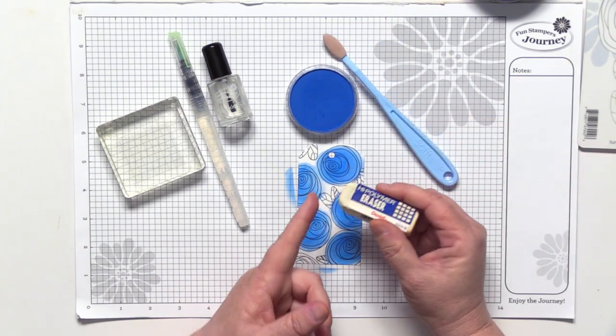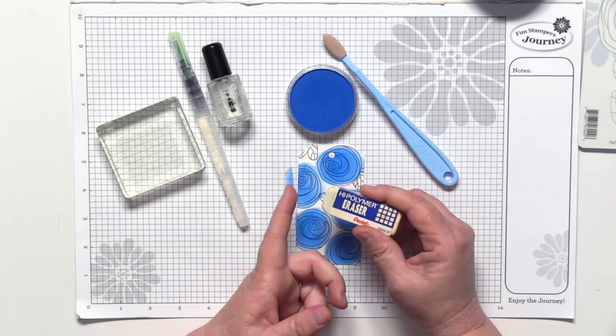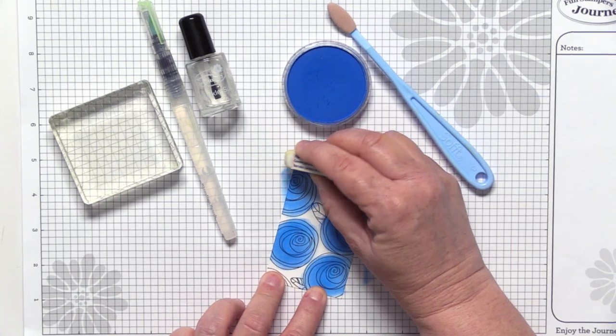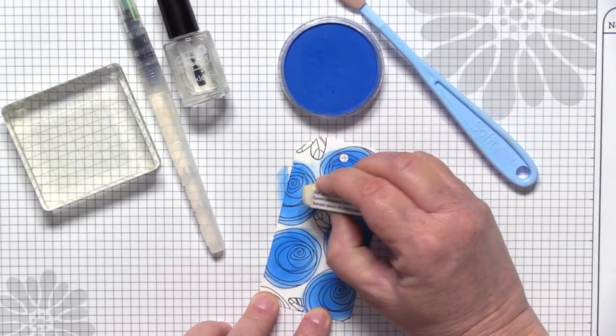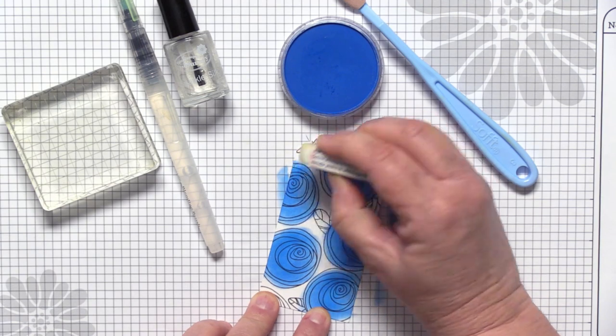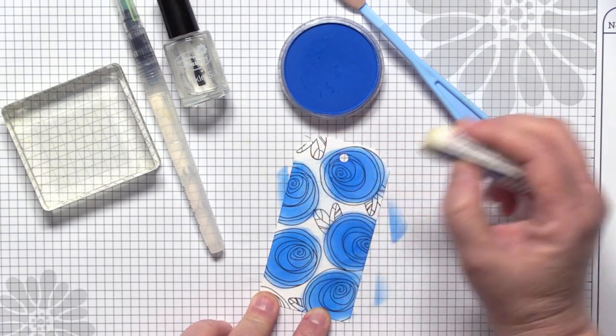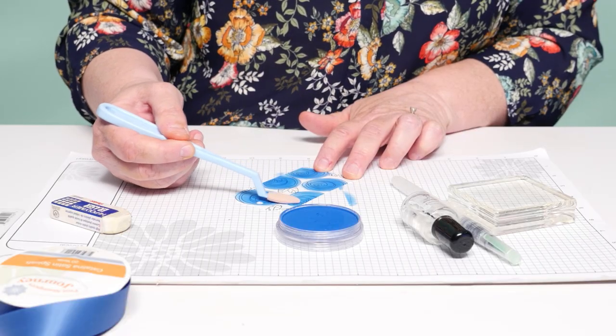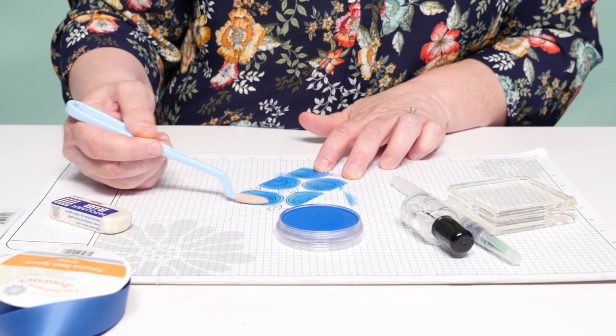I kind of shared this tip in one of our other videos, but if you get a spot that you don't care for, you can use any white artist eraser. Maybe this flower has a little bit too much around the edge—you can just come in and erase that. Anywhere you get pen pastel that you're not super happy with, just erase it, and you can come in and add color back exactly where you want it.